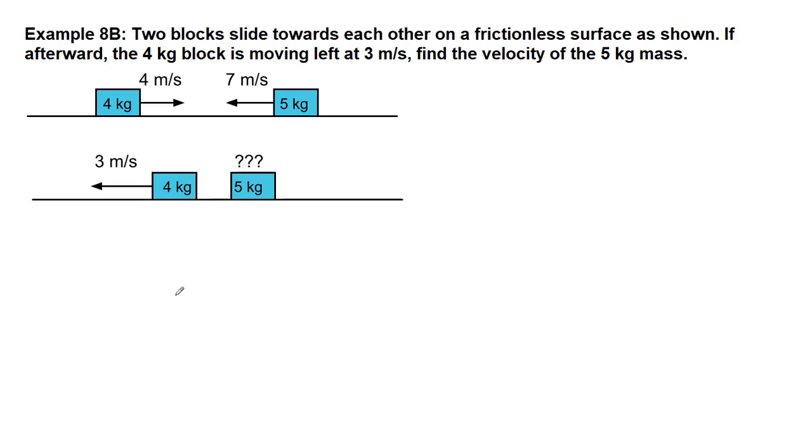Welcome back to the second example for Chapter 8. We have two blocks sliding towards each other, and they hit each other. The 4-kilogram block we know something about, but we want to try to figure out how fast and in what direction the 5-kilogram block is going. Because this is a collision, any time that we have a collision of any kind, things hit each other, then we want to use momentum conservation.